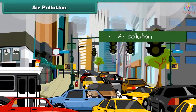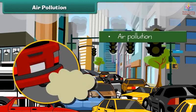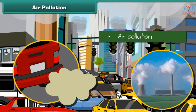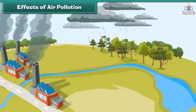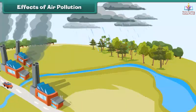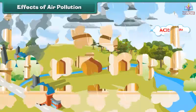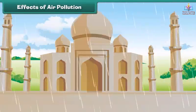Air gets polluted when unwanted substances — air pollutants — enter it. How do these substances enter the air? Air pollutants come due to burning of fuels and emission of poisonous gases from industries. This polluted air mixes with clouds in the atmosphere and brings harmful rain, also known as acid rain. Acid rain damages our buildings and monuments.